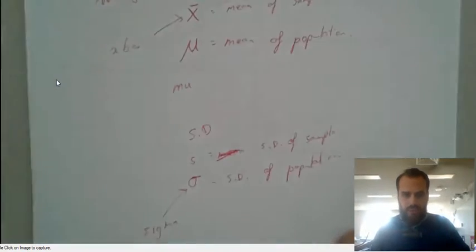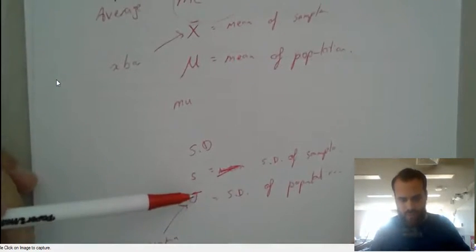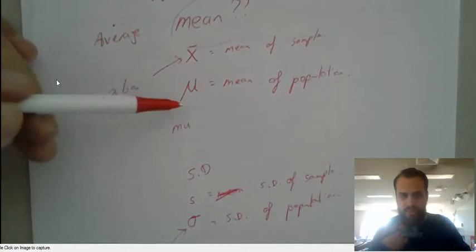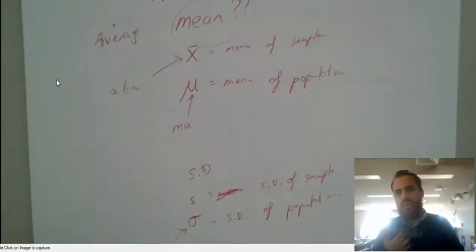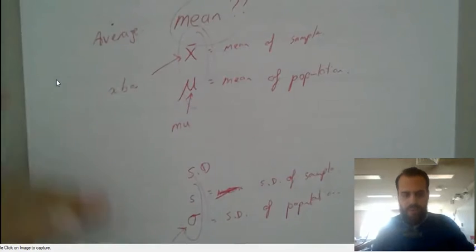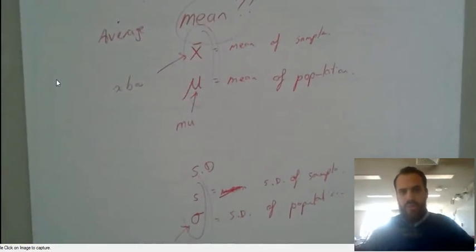We will generally use sigma and I think we'll probably use mu. It depends upon the question. But as long as you understand that these and these both mean mean and standard deviation, we're all good.